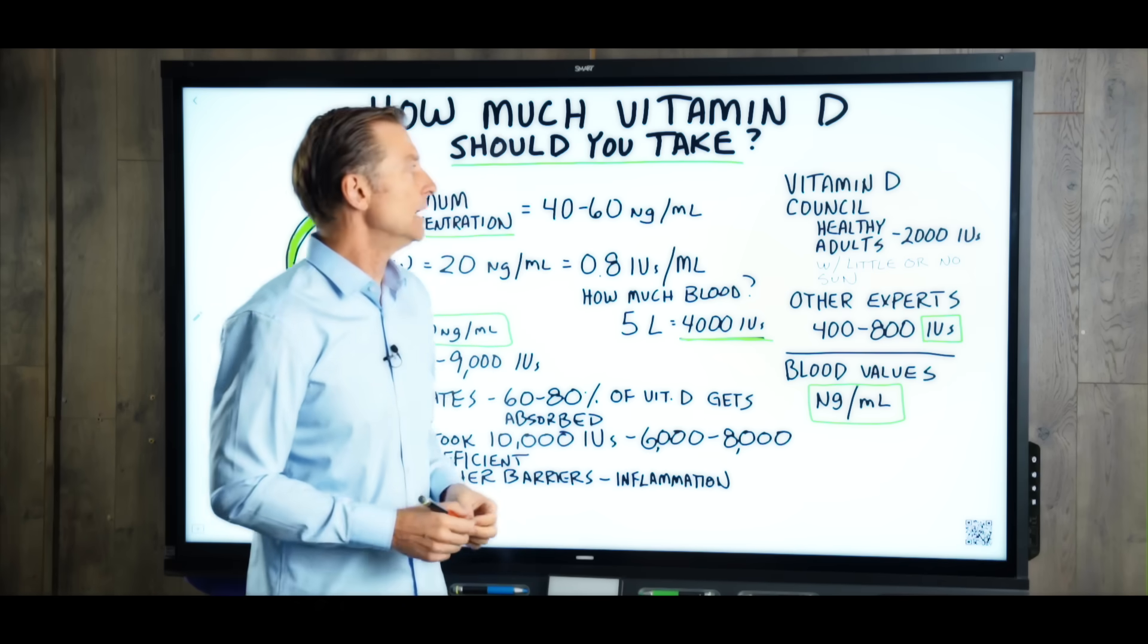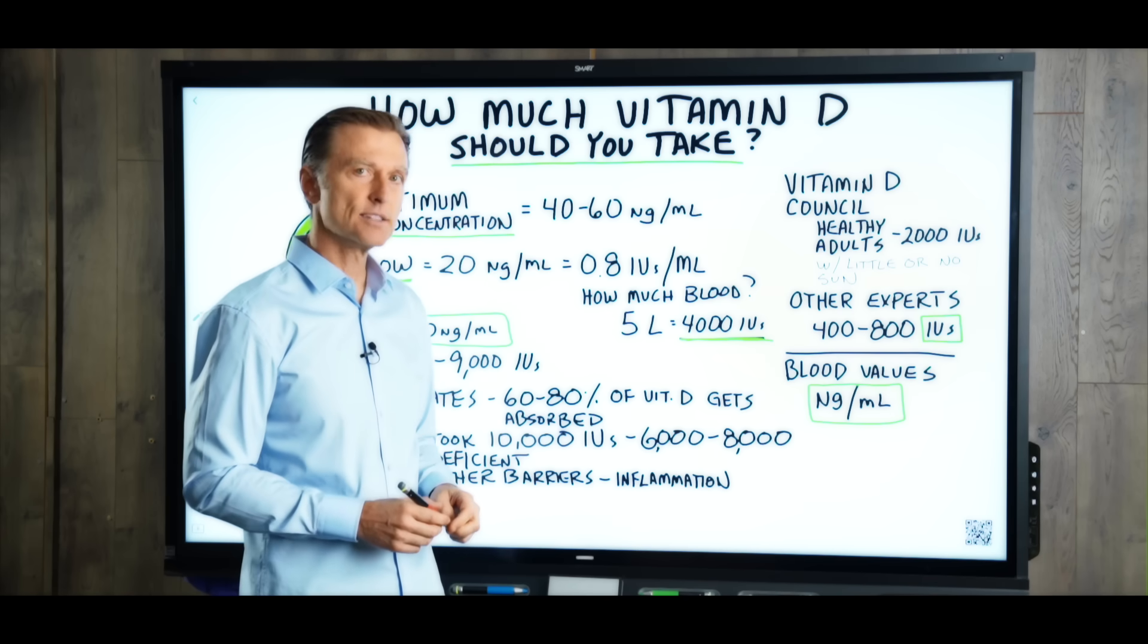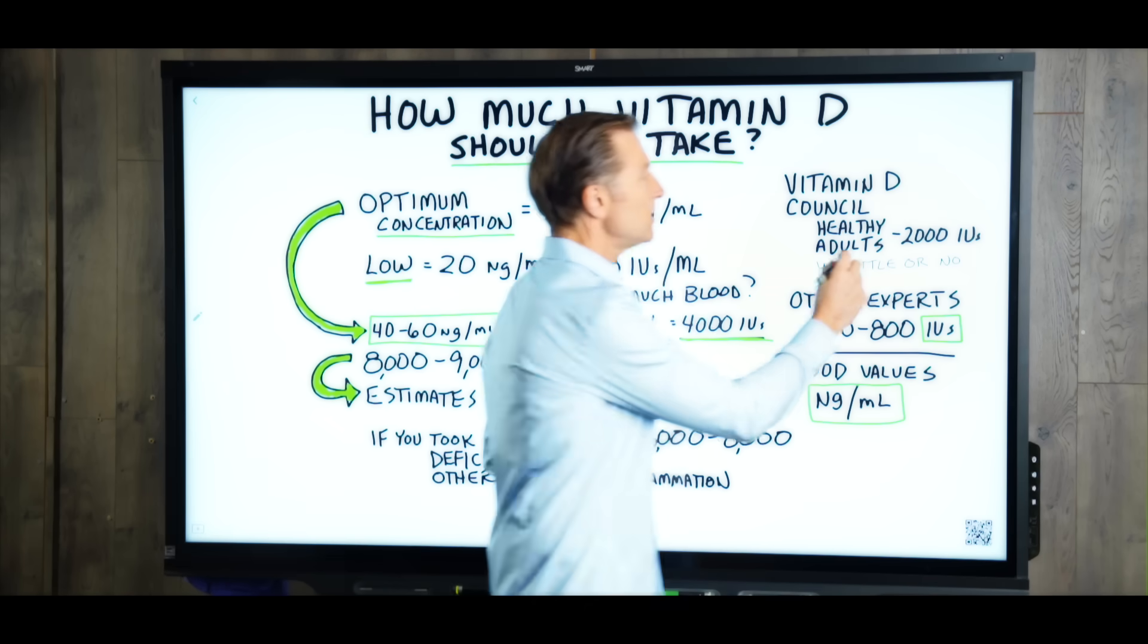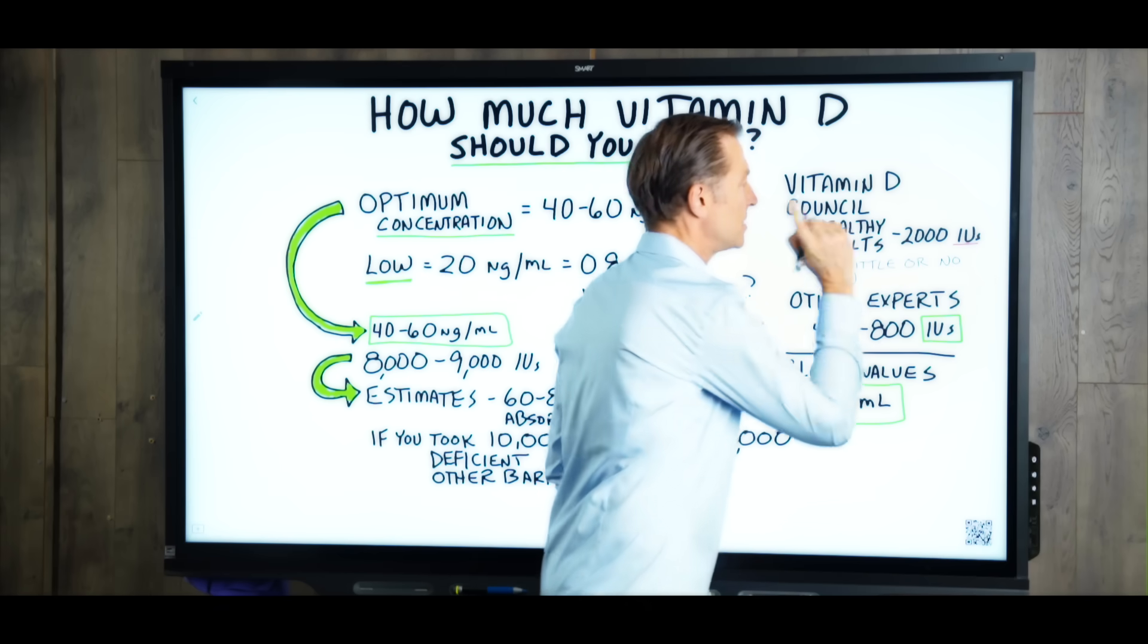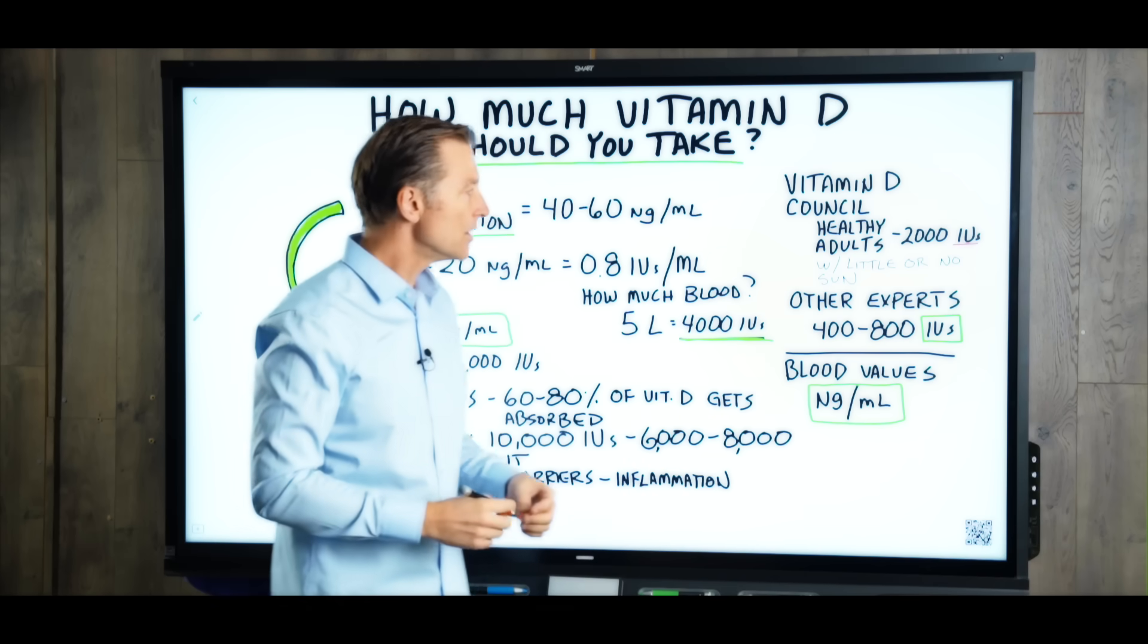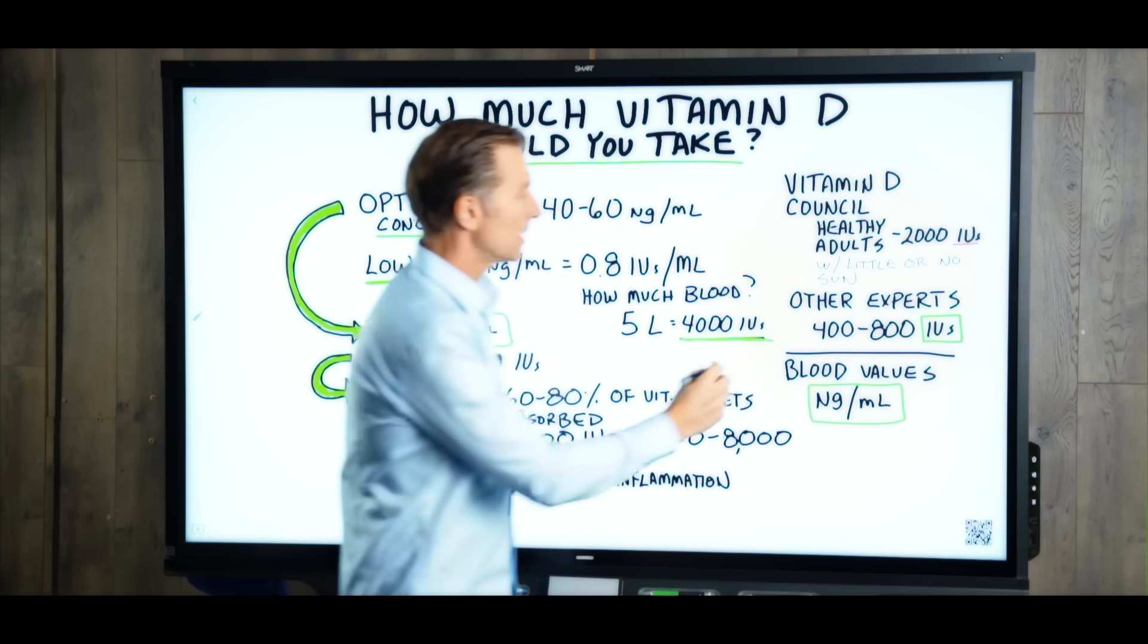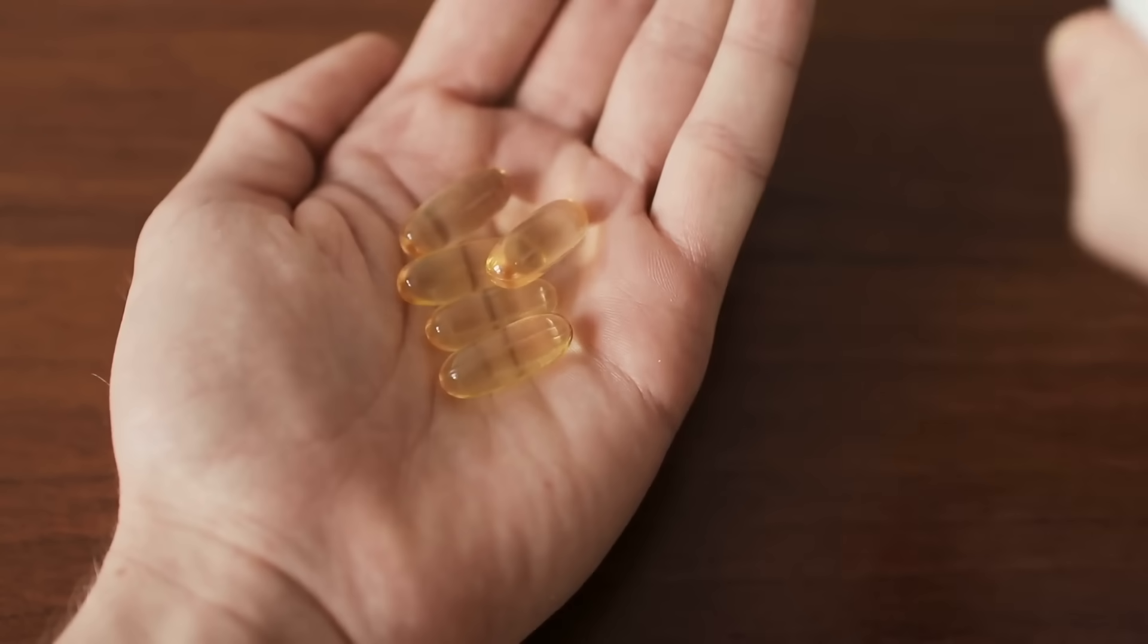The vitamin D council stated that healthy adults, which I'm still trying to find some healthy adults, need about 2,000 IUs, that's international units per day if you're getting little to no sun. Other experts recommend 400 to 800 IUs per day.